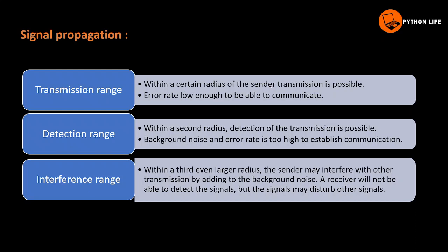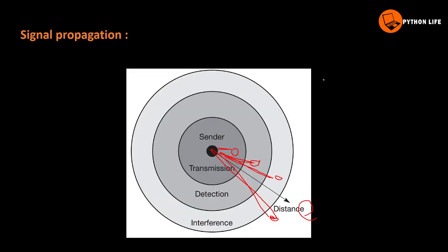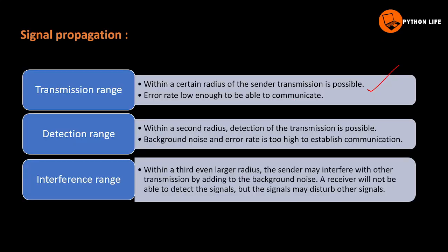There are three ranges: transmission range, detection range, and interference range — each measured as a distance from the center. Within a certain radius of the center, transmission is possible with a low enough error rate to allow communication.